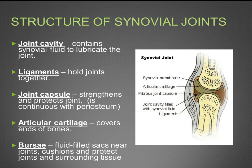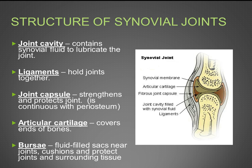The structure of synovial joints includes a joint cavity containing synovial fluid to lubricate the joint. You have ligaments, which hold the joints together, and a joint capsule that strengthens and protects the joint. This is continuous with the periosteum — 'peri' meaning around, 'osteo' meaning bone — connecting with the periosteum of the bone.